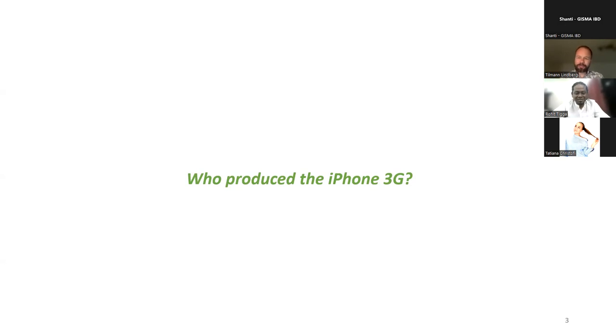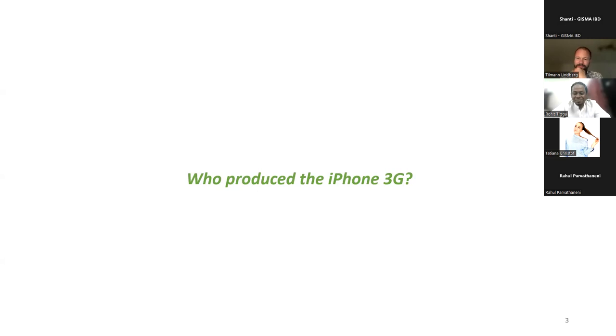Rahul, you raised your hand. Please answer. Foxconn. Very good. I know that iPhones are manufactured by Foxconn on a contract basis, so I said it is produced by Foxconn. Very good, thank you. Of course, it's an Apple product, but Apple has outsourced manufacturing of the iPhone to a Taiwanese company called Foxconn. Foxconn has higher annual revenues than some countries we are quite familiar with — it's really one of the large global electronics manufacturers.